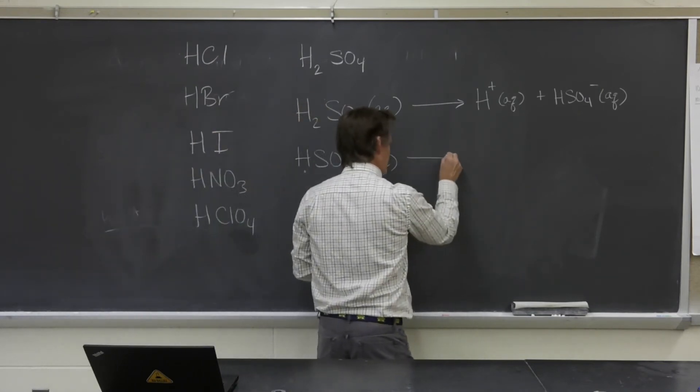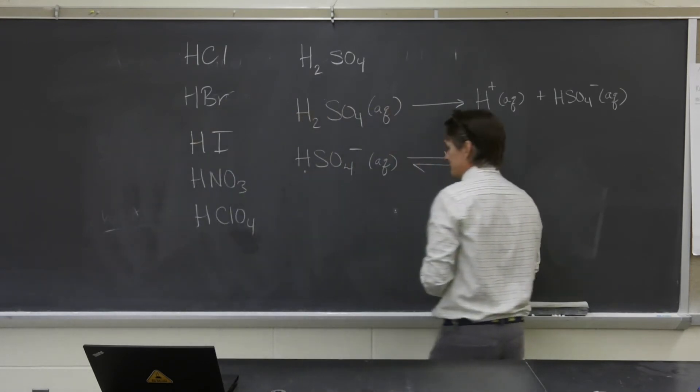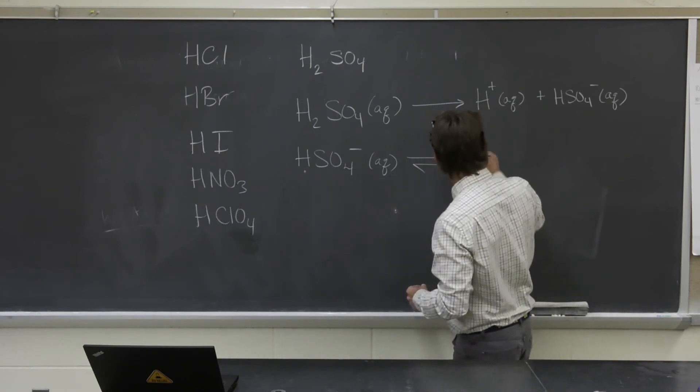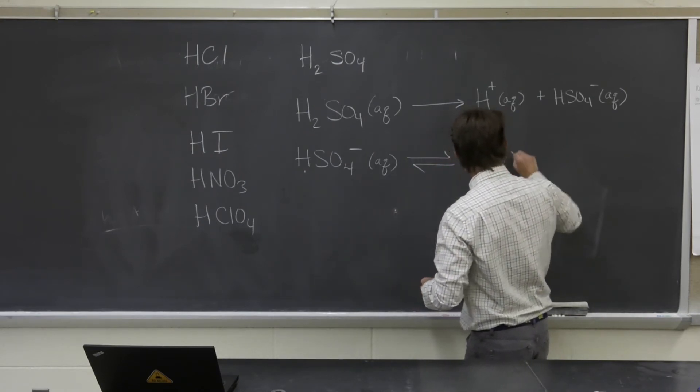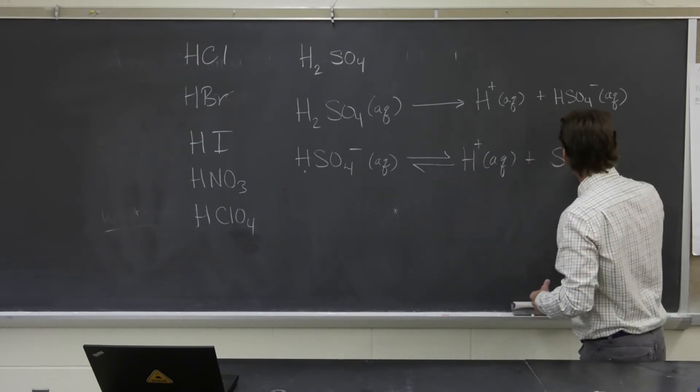There's another one that can pop off. So the hydrogen sulfate ion is a weak acid. Some of it goes on to dissociate to form, what do you think? Well, an H plus is going to come off because it's an acid. So it's got to donate that H plus. And what's going to be left over? The sulfate ion.